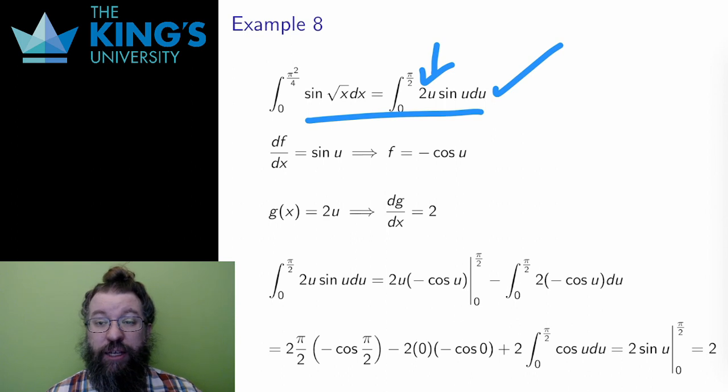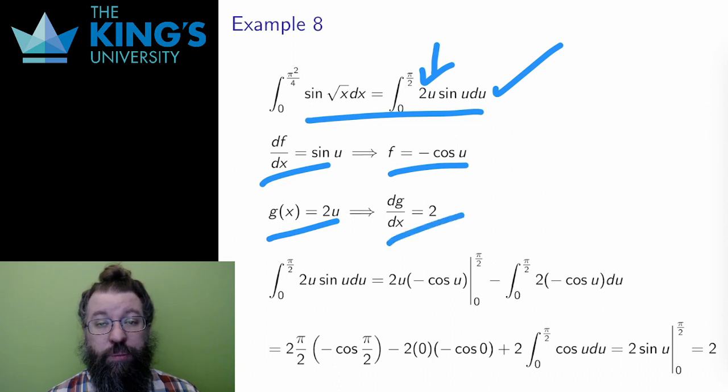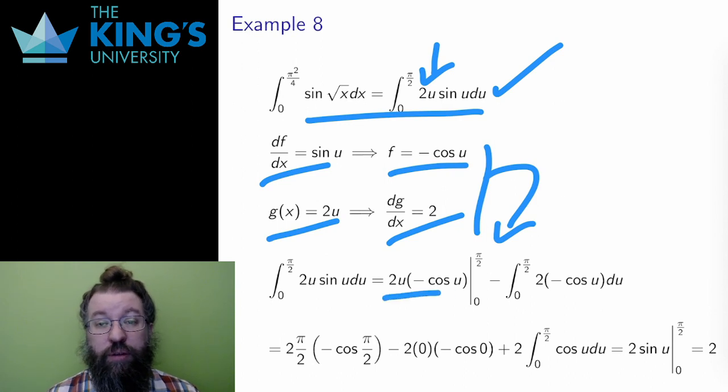I set df/dx as sine u, and g as two u, so that f is negative cos u, and dg/dx is two. Then I applied the right side of integration by parts. The fg part is two u times negative cos u evaluated on the bounds, and the integral is now the integral of two times negative cos u.